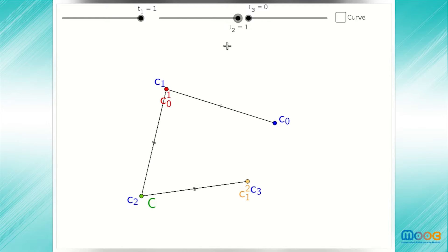If we set t sub 2 to be 1, t sub 1 to be 1, and t sub 3 to be 0, we obtain the second control point, c sub 2. If all of the proportions are equal to 1, we obtain the final control point.